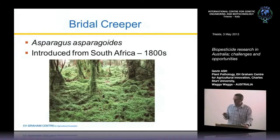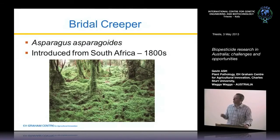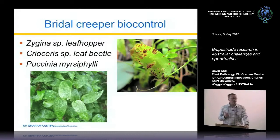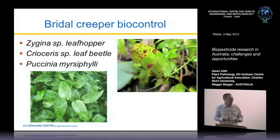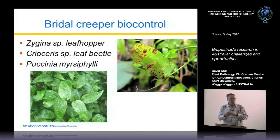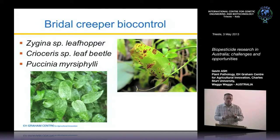We also have bridal creeper, an asparagus from South Africa introduced in the 1800s. It just covers and carpets the forest floor. There are a number of leafhoppers and rusts which have been released against it, and this has been very successful — people in communities are taking the leaves, washing them, and spreading them further to get more control. All these biological controls involved going back to the natural area where the weeds originated, isolating something from the environment and taking it back to Australia. Sometimes it works, sometimes it doesn't. There's variation in genetic background, it's expensive, and we're working with single organisms one at a time — which, because of our quarantine in Australia, is a very expensive process.